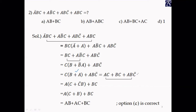Applying the formula B + B̄ A = B + A, and then examining the first and last terms where A is common, with C + C̄ B inside the brackets, we apply the same formula to remove C̄. On multiplying out, you get A + BC, and ultimately the simplified result is AB + AC + BC. Option C is correct.